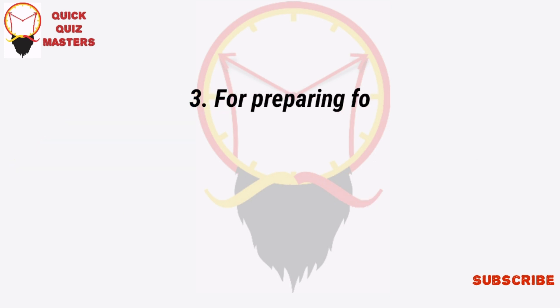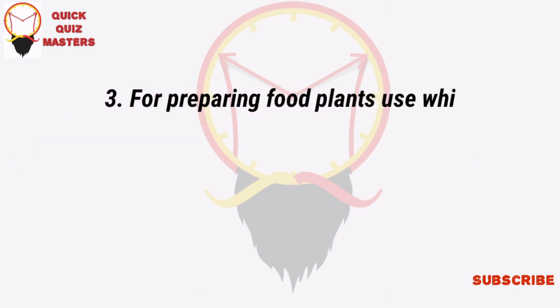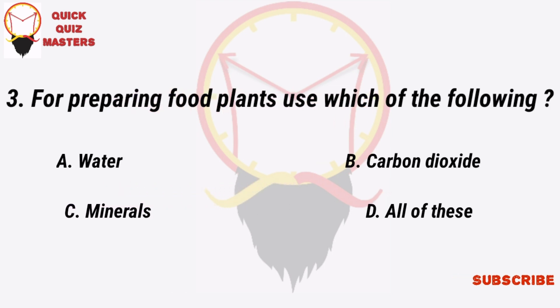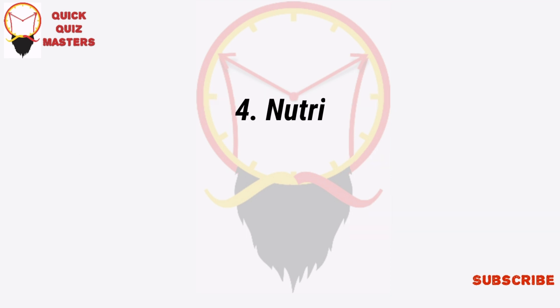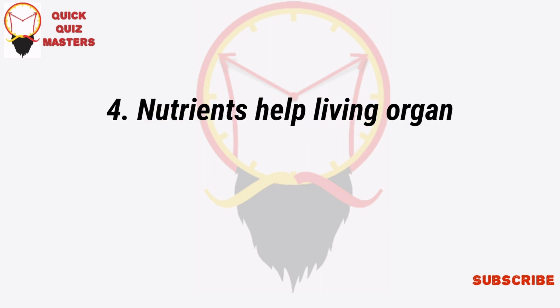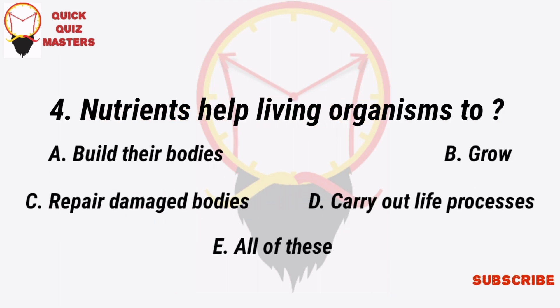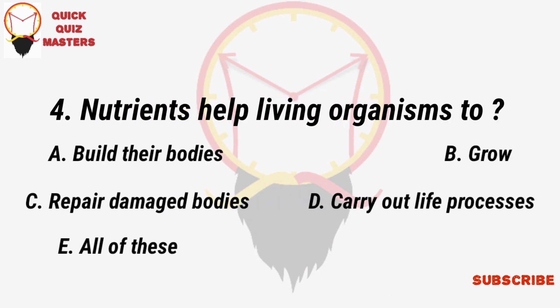For preparing food, plants use which of the following? Water, carbon dioxide, minerals, all of these. Nutrients help living organisms to build their bodies, grow, repair damaged bodies, carry out life processes — all of these. Which?